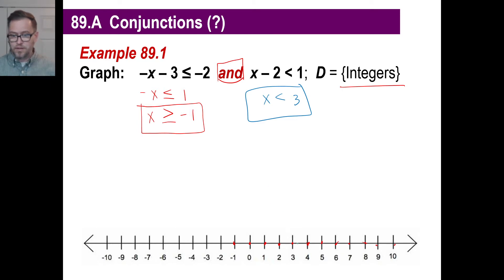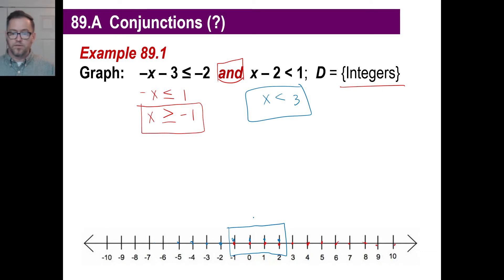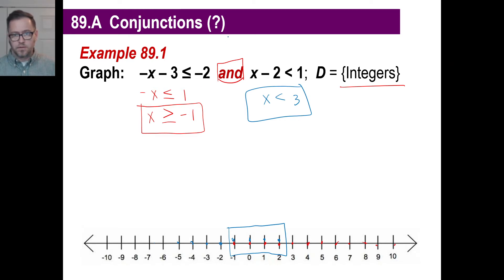We're not allowed to use 3, but we're allowed to use 2, and that, and that, and that — just keep going all the way down. Now, you notice there are only 4 of these that match, that intersect. That is our set of answers right there: negative 1, 0, 1, and 2. You'll graph those, and where those intersect is your answer, because that meets the 'and' criteria.